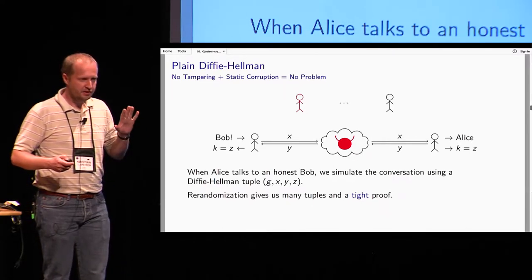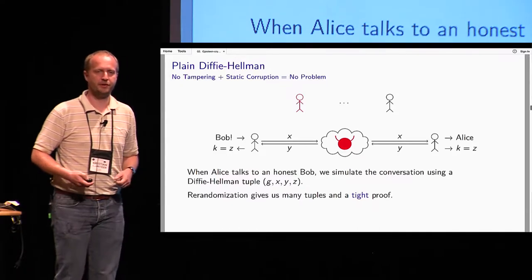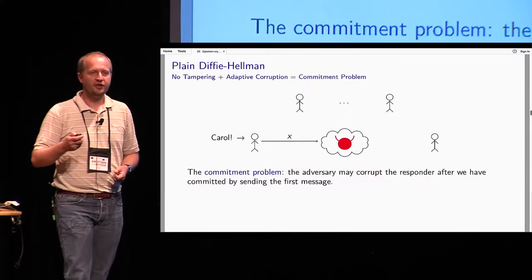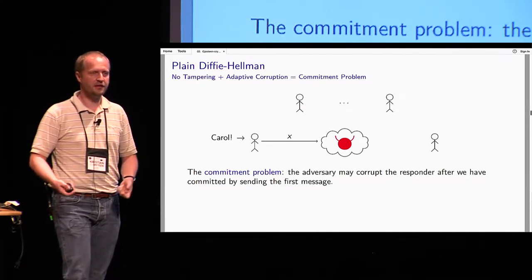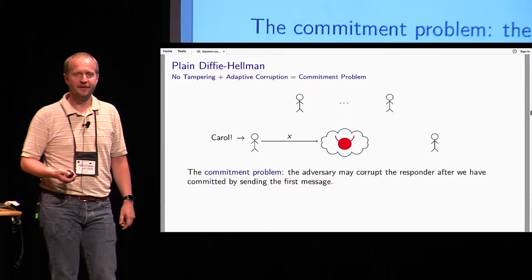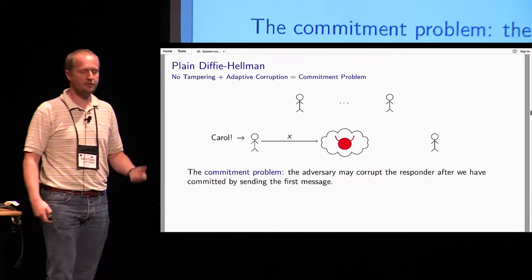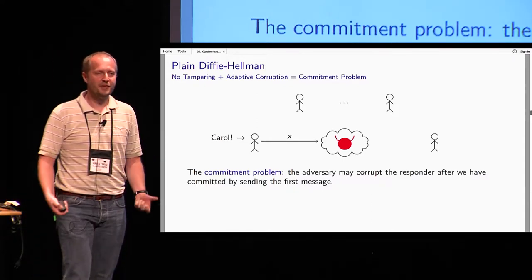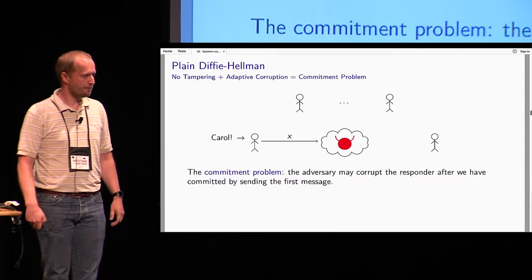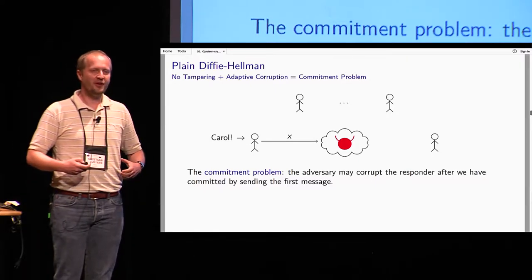Now what happens if the adversary still promises not to tamper with messages, but is allowed to adaptively corrupt — meaning he doesn't have to tell us in advance who he'll corrupt? The adversary tells Alice to talk to Carol, but hasn't corrupted Carol yet. Our reduction — trying to trick the adversary into solving Diffie-Hellman — has to decide on a message to Carol, but the adversary who can do adaptive corruption gets to decide later whether or not to corrupt Carol. We have to commit to something before the adversary makes his choice.